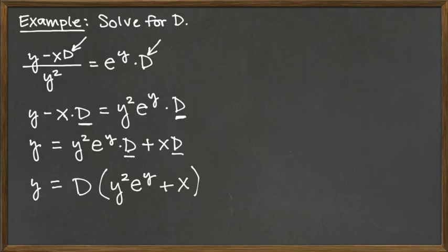And so what that leaves us with then is d is equal to the y over everything that was in parentheses sitting right next to the d. So that would be the y squared e to the y plus x.